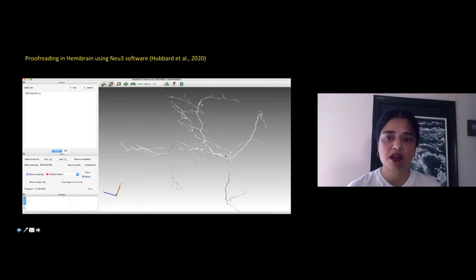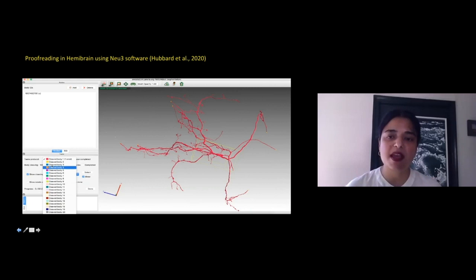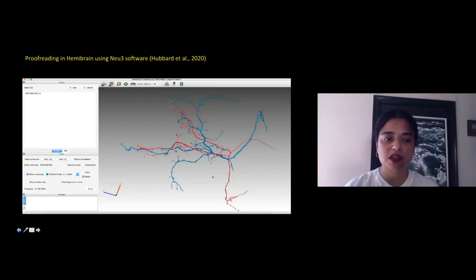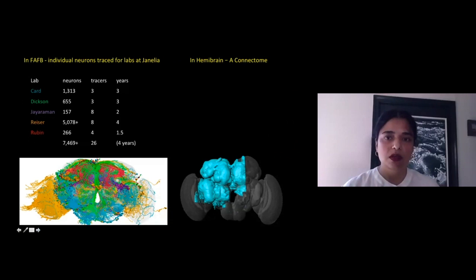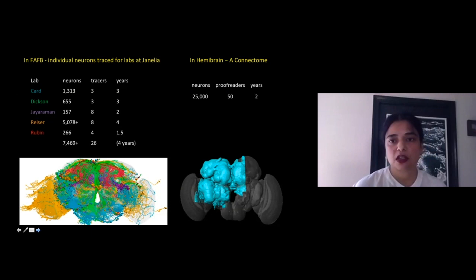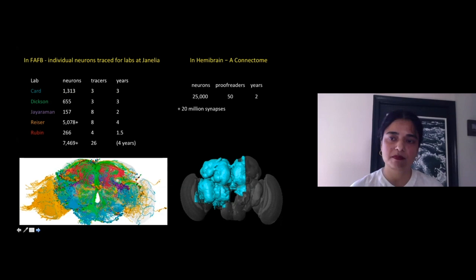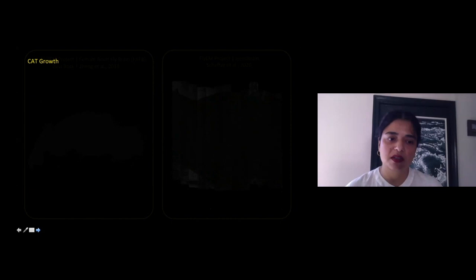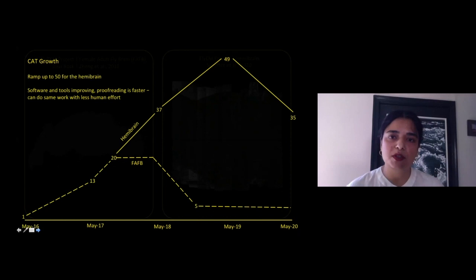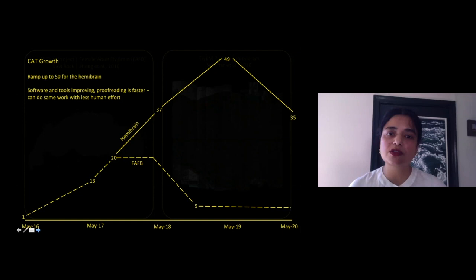In this particular instance, they decide there are two neurons and color one red and the other blue. The proofreader makes this call in the software, but the actual splitting or cleaving happens behind the scenes algorithmically. For the Hemibrain connectome, it took 50 proofreaders two years to review 25,000 neurons, with 20 million synapses connecting those neurons to each other. The team growth reflected these requirements, with a ramp up to 50 people for the Hemibrain, while tools and software were simultaneously developed to get faster and better.